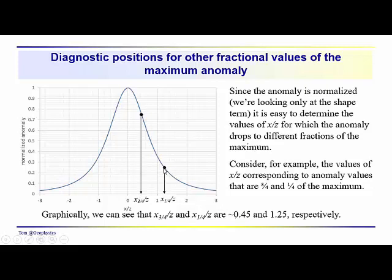Likewise, the anomaly drops off to one quarter of its maximum value at about, this is 0.2, this is 0.4, yeah, about 1.25. So we have these values of x/z, and again, if we measured off the x_3/4 distance on a survey map and the x_1/4 distance, we could convert that into z's.